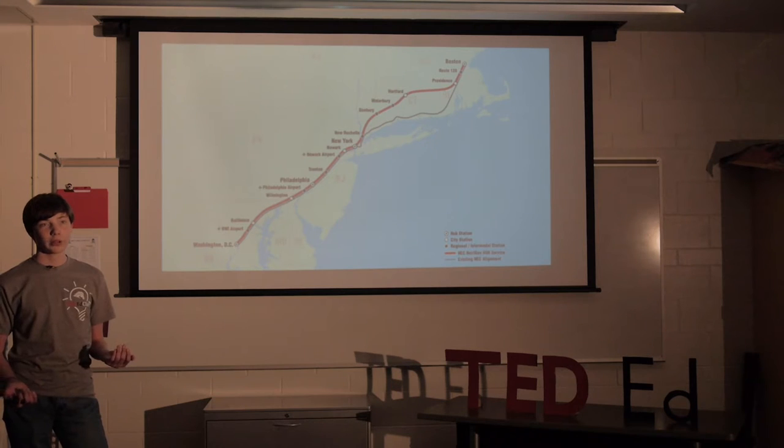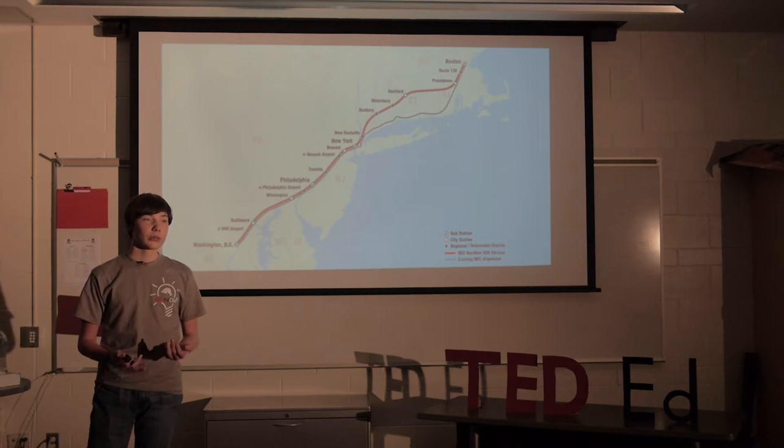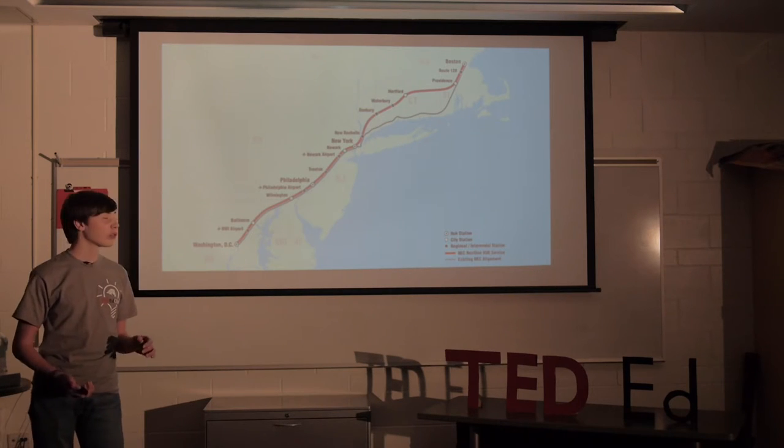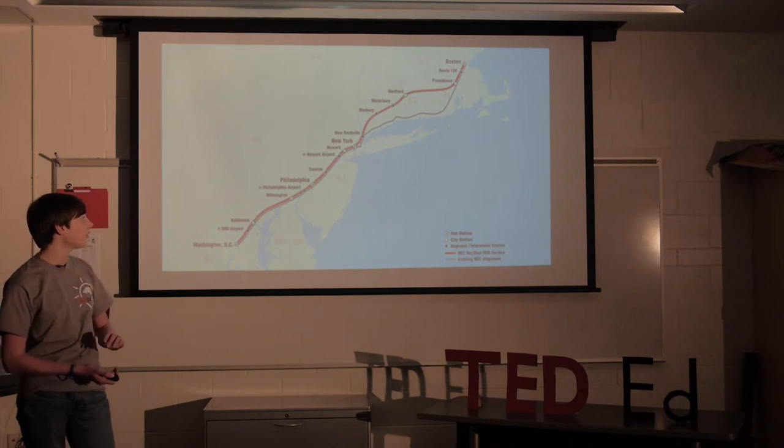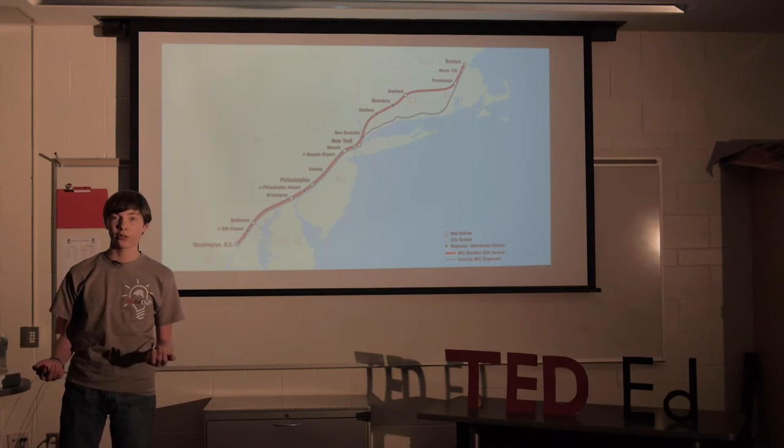The Northeast Corridor is a track that runs from Boston to Washington, DC. The reason that has been developed is because there's multiple high density cities in a close area, just like in Europe, where there have been high speed rail developed.